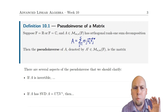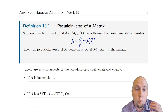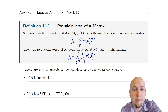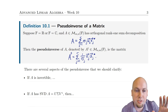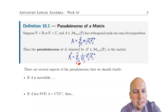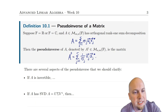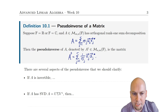Once you've got that orthogonal rank-one sum decomposition, you just flip everything around and you get what we call the pseudo-inverse of the matrix, denoted A-dagger. It's the same sum over r terms, except instead of multiplying by σ_j you divide by σ_j, and then you swap the roles of the u's and v's — it used to be u_j v_j*, now it's v_j u_j*.